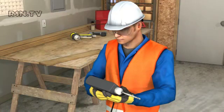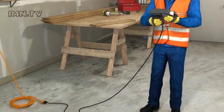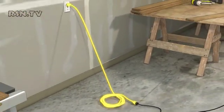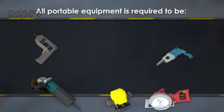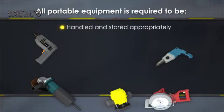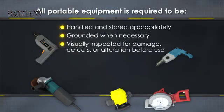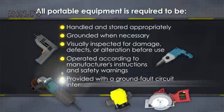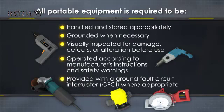There are a few requirements for portable electric equipment, which includes their cords, plugs, and any extension cords. All portable equipment is required to be: handled and stored appropriately, grounded when necessary, visually inspected for damage, defects, or alteration before use, operated according to manufacturer's instructions and safety warnings, and provided with a ground fault circuit interrupter, or GFCI, where appropriate.